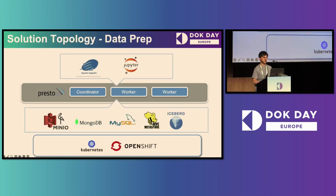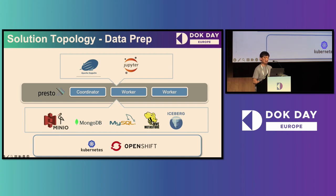Here is the complete topology we set up for data preprocessing. We deploy everything on Kubernetes — you can also switch to OpenShift. On top of it, we have MinIO cloud storage, MongoDB for semi-structured data, and MySQL for structured data. We use the Iceberg table format, and the metadata store is used by Iceberg to store metadata information. On the Presto layer, we use the Presto Helm chart to construct a three-node cluster — one cluster coordinator and two workers. On top of that, we use Apache Zeppelin for visualization and Jupyter Notebook where data scientists can try out Presto SQL and do their data analytics work.